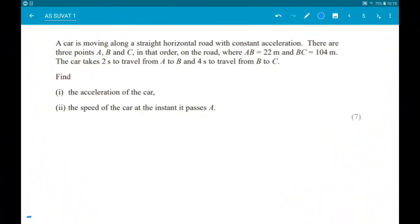Okay, next up, a nice 7 marker. So a car is moving along a straight horizontal road with constant acceleration. There are three points on the road, A, B and C, where AB is 22 meters and BC is 104 meters. The car takes 2 seconds to get from A to B and 4 seconds to get from B to C. Our job is to find the acceleration of the car and the speed of the car at A. Okay, so we have two unknowns. We have a technique for finding two unknowns - that's simultaneous equations.